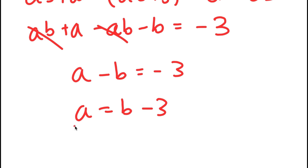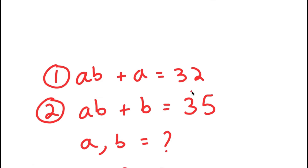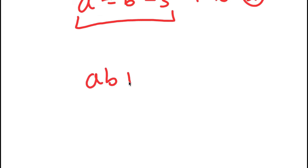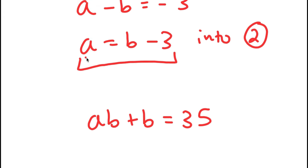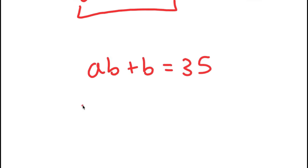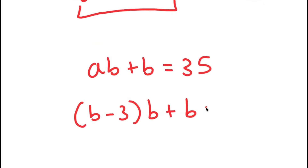So now what I can do is substitute this value of A into equation number two. Equation number two is AB plus B equals 35. Now that I've got a value of A in terms of B, I can plug this in. So now I get (B minus three) times B plus B is equal to 35. And now my only variable in this equation is B.